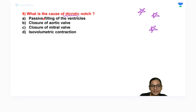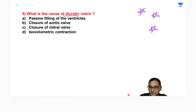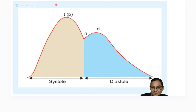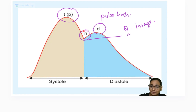What is the cause of the dichrotic notch — passive filling of the ventricles, closure of the aortic valve, closure of the mitral valve, or isovolumetric contraction? On the pulse tracing there is a percussion wave, a dichrotic wave, and a dichrotic notch. This notch is also called the incisura.